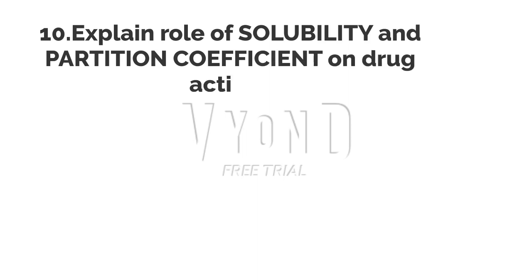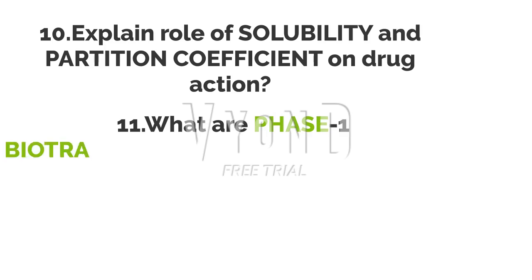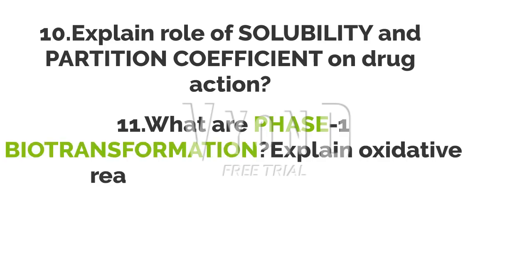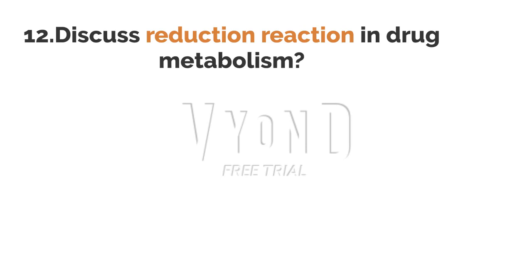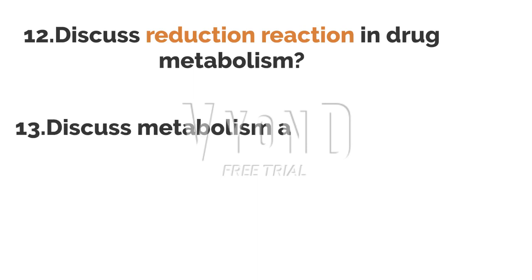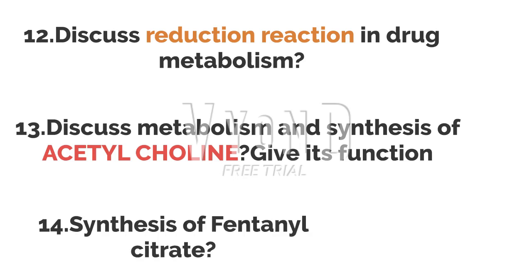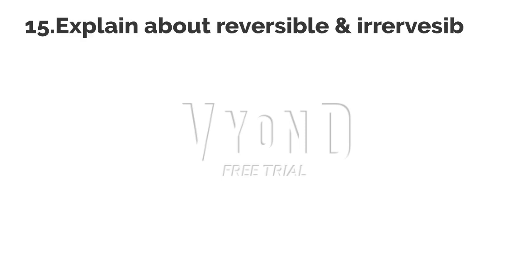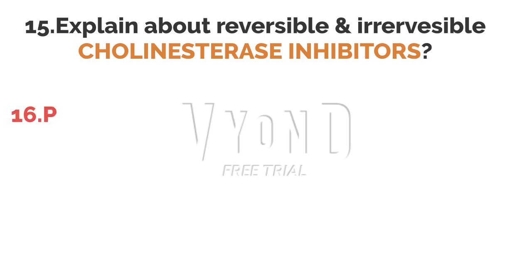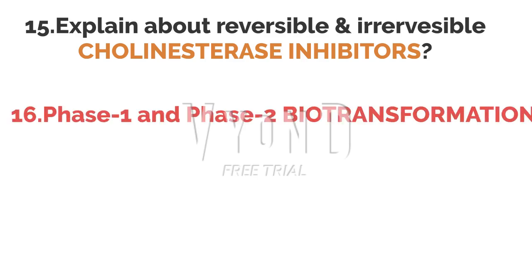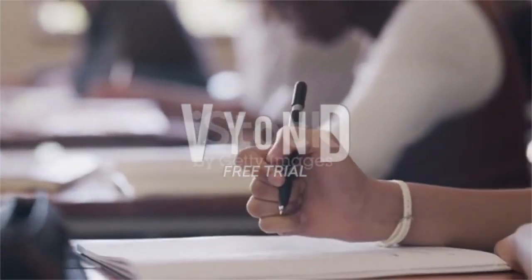Eighth question: Write a note on cholinergic inhibitors. Ninth question: Classify adrenergic blockers, and write the synthesis and uses of tolazoline. Tenth question: Explain the role of solubility and partition coefficient on drug action. Eleventh question: What are phase one and phase two biotransformation? Explain oxidative reactions. Twelfth question: Discuss reduction reactions in drug metabolism. Thirteenth question: Discuss metabolism and synthesis of acetylcholine and give its functions. Fourteenth question: Synthesis of fentanyl citrate. Fifteenth question: Explain reversible and irreversible cholinergic esterase inhibitors with examples.